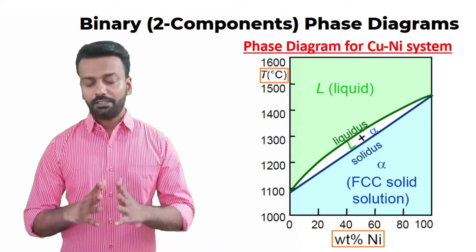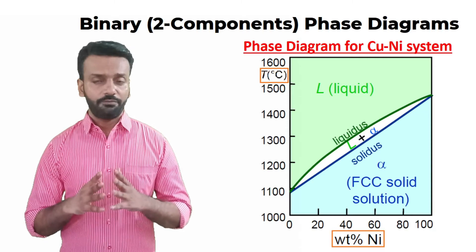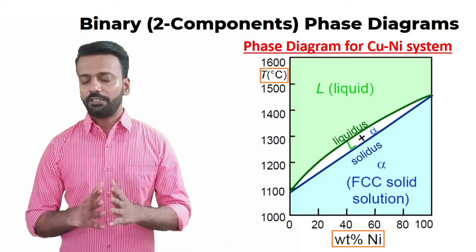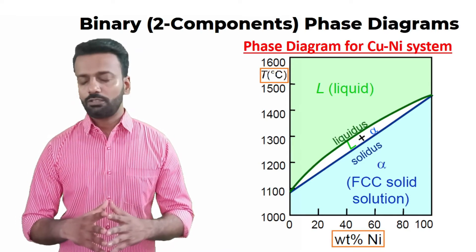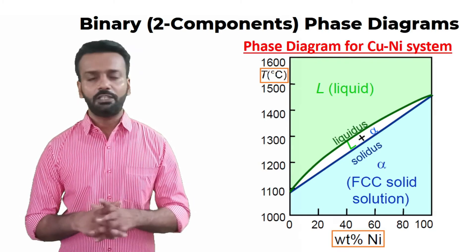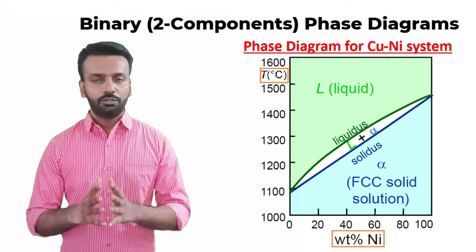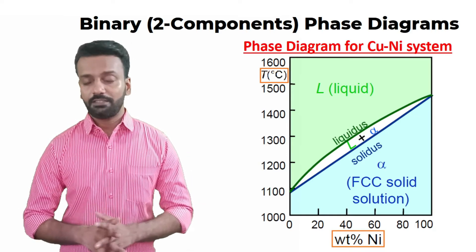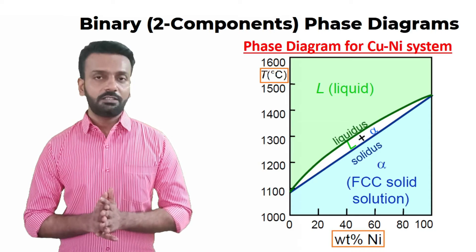This is a typical example of a two-component binary phase diagram of copper and nickel. On the x-axis you can see the weight percent of nickel, and on the y-axis it has temperature. You can see different phases on this diagram: a liquid phase denoted by L, a solid phase called the alpha phase, and a two-phase field of liquid plus alpha, where both solid and liquid are existent together.